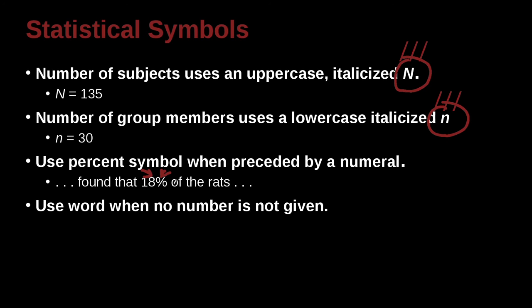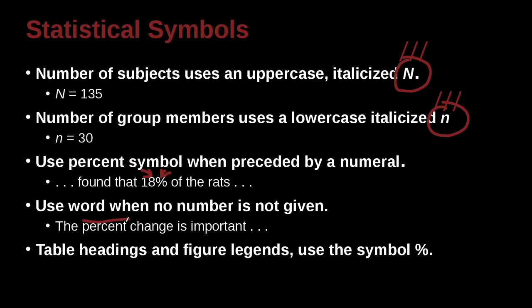But when you don't have a number, you need to use the word. So for example here, we say the percent change is important. Obviously this percent has no number before it, so we spell out the word percent. Table headings and figure legends also use a percent symbol. So when you're doing something like a table, then you can use the percent symbol rather than writing it out.